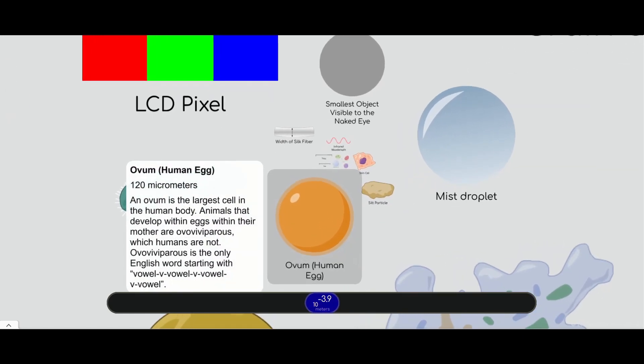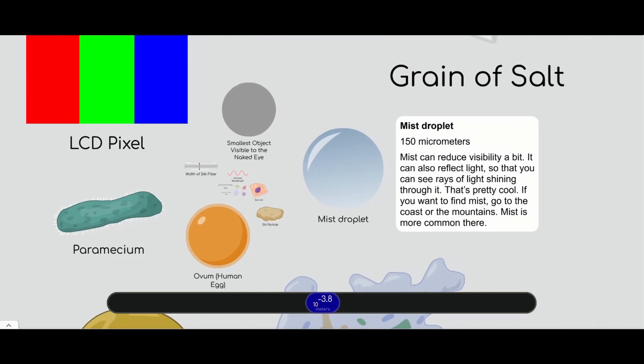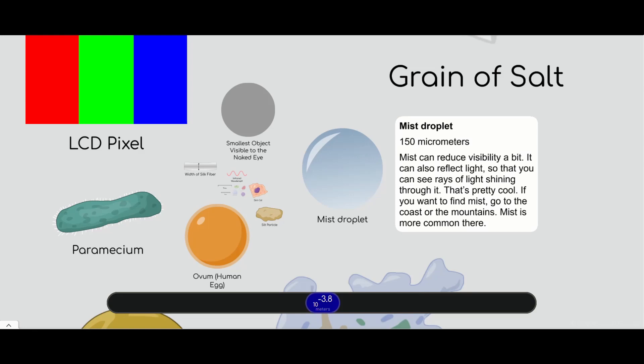This is interesting. It's the largest cell in the human body. Looks a little bit like a chicken egg, doesn't it? I mean the yolk. Oh, mist droplet right next to it. Have you ever seen fog? That's what fog is made of. Droplets of mist.